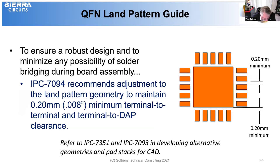To ensure robust design and minimize possible solder bridging during board assembly, IPC 7094 recommends adjustment of land pattern geometry to maintain an 8 mil minimum terminal-to-terminal and terminal-to-die attach pad clearance. The die attach pad functions as a platform to support the die during the wire bond process, and it is typically exposed to the bottom surface of the component.